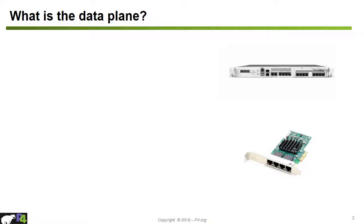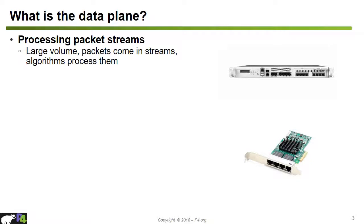So what is the job of the data plane? Basically the main job of the data plane is processing a large volume of packets. There are millions of packets per second that enter a high-performance router, and packets come in streams of data. Clever algorithms run on the switches to process these packets, and there is only a very small time — on the order of a few nanoseconds — to process a single packet.